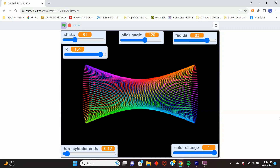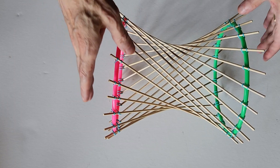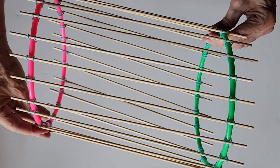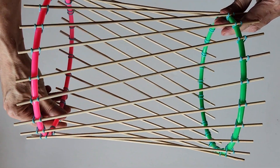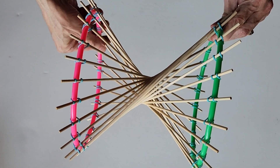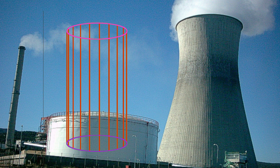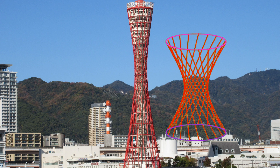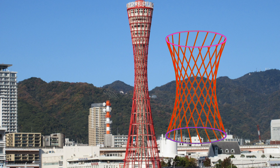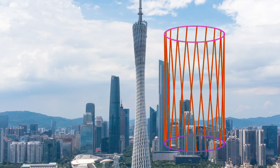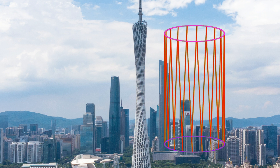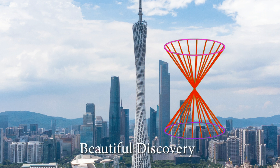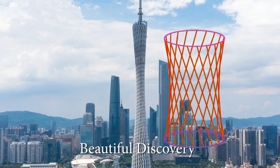Now we have both a physical stick model and a coding model of real architectural structures like cooling towers. Didn't you ever look at those cooling towers and wonder how they got that shape? As you can see in these fancier towers, you can get the shape with straight sticks — that's what we learned by creating a model with code and with real sticks.